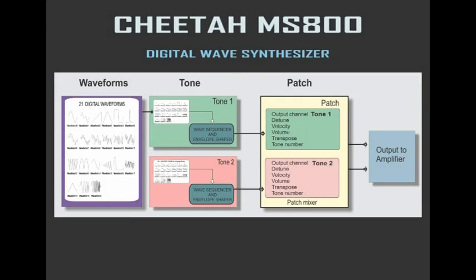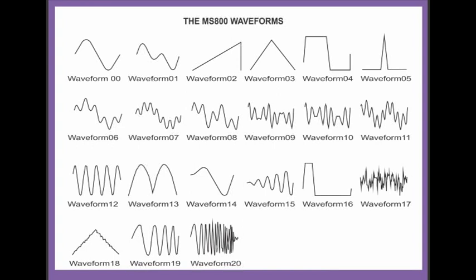So we have a series of waveforms, about 21, and these are digitised and we read them out and give different commands inside a tone, and we put a number of tones together to make a patch. It doesn't have oscillators as we know them, they're just digitised versions of the waveforms that have been stored in a memory and then they're read out in a particular sequence to create a tone. Let's have a listen.